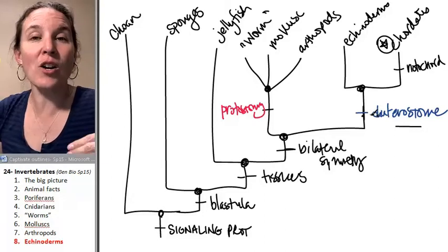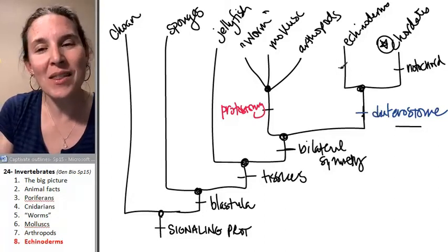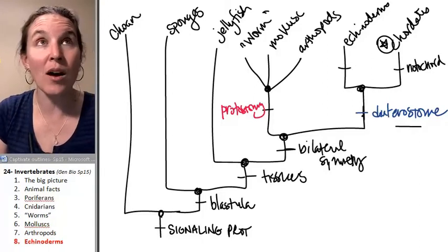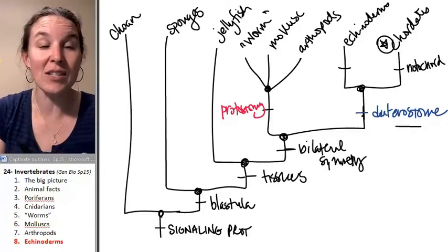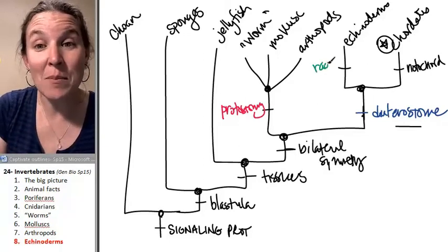Echinoderms are deuterostomes that do not have a notochord. And you know what? This is really interesting. And this is a good example of a characteristic that disappears and then comes back. They are radially symmetric.